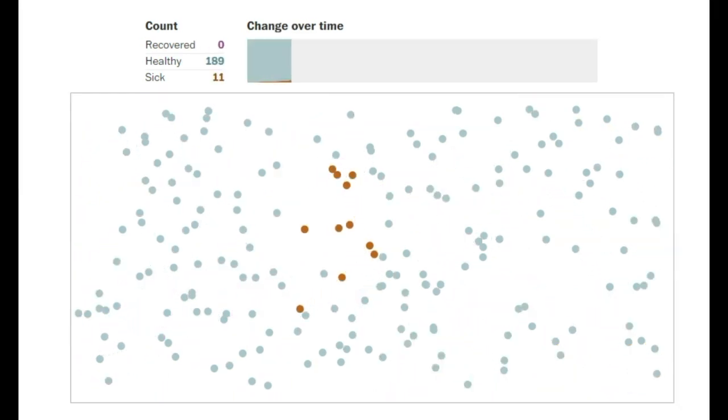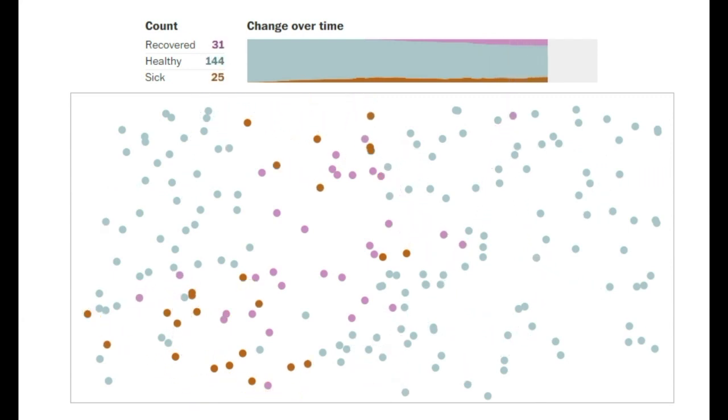Now let's have a look at the situation where only one eighth of the population moves. You can see that the spread of the virus has slowed down a lot and that the curve is much flatter than before.